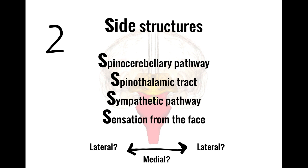In contrast, there are four main structures found to the side that each begin with the letter S: the spinocerebellar pathway connecting to the cerebellum, the spinothalamic tract carrying crude touch, temperature, and pain, the sympathetic pathway traveling to the face, and the nuclei for several sensory neurons coming from the face via the trigeminal nerve.